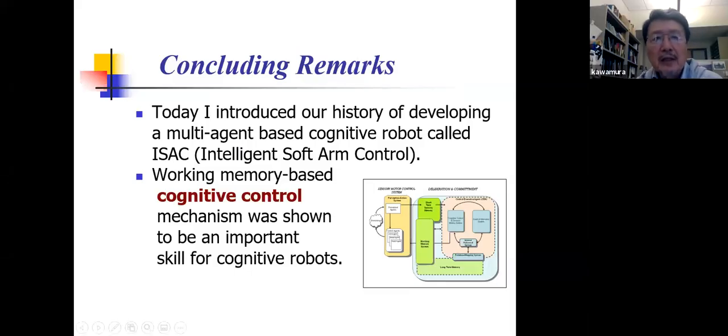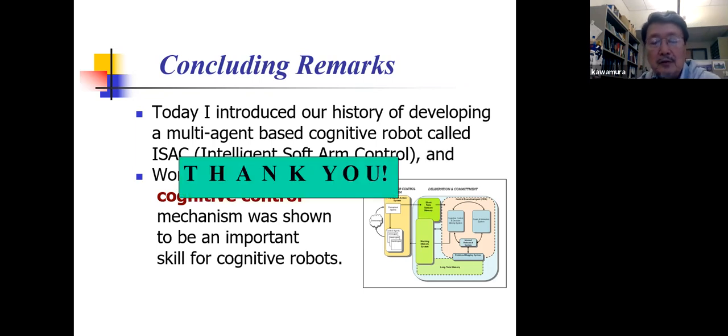So today, I introduced our history of developing a multi-agent-based cognitive robot called Isaac. And in particular, I explained working memory-based cognitive control mechanism and was shown to be an important skill for cognitive robots. So, thank you for watching the video. Hope you learned something. Bye.